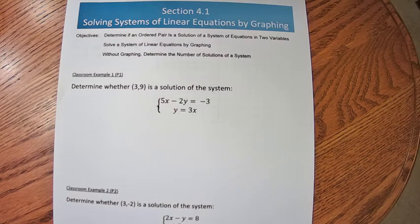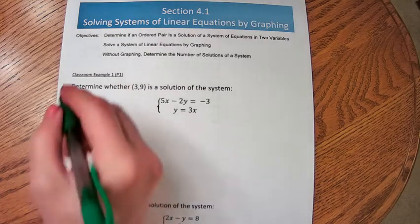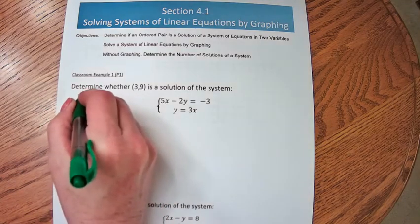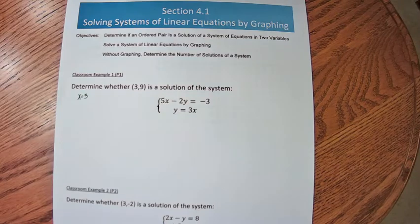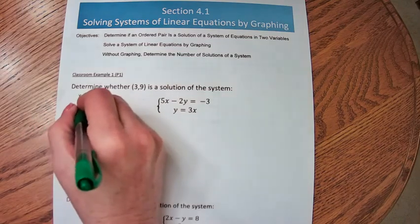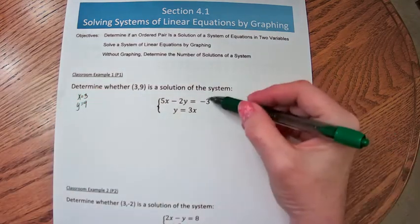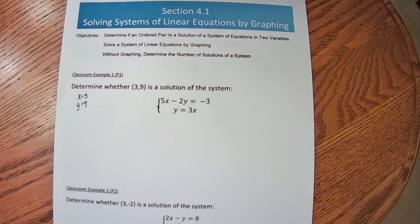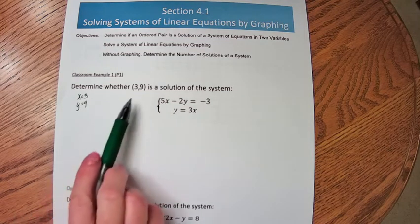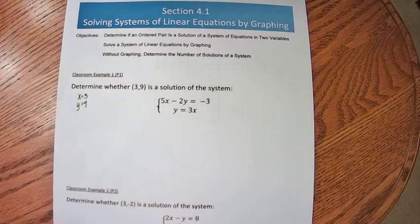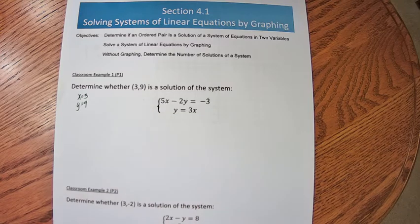The shorthand notation for a value for x and a value for y would be an ordered pair. So we want to know if when x is 3 and y is 9, will both of these equations be true. Both equations have to be true for this ordered pair to be a solution to the system. If either one of them is not true, then we would say no — the ordered pair is not a solution.